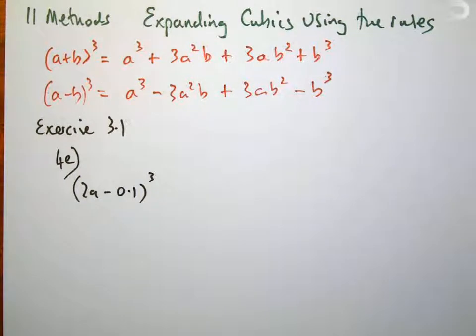This is for Year 11 Methods and it's involving expanding cubics using the rules (a+b)³ and (a-b)³ as provided there. Exercise 3.1 for E has (2a - 0.1)³.